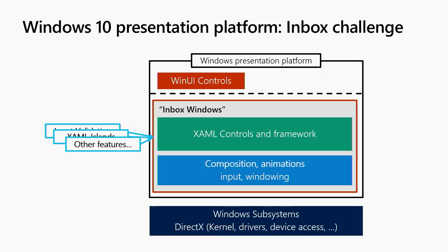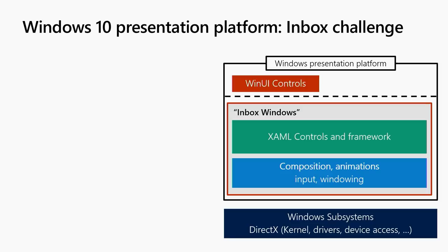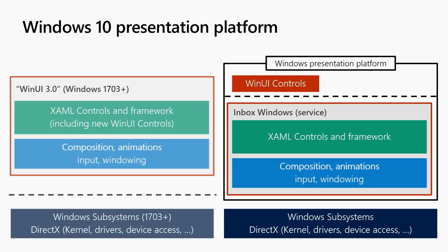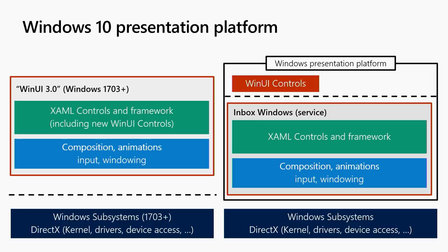We've been stepping back and thinking about a different way to attack this problem. We've been working top-down from controls, because those are easier to decouple and layer cleanly on top of the platform. But what if we just took the whole platform — the composition system, controls, framework, everything — took that out of Windows, rewired it to work on 1703 and above, made that available as a NuGet package, and allowed you to use it just like WinUI today?